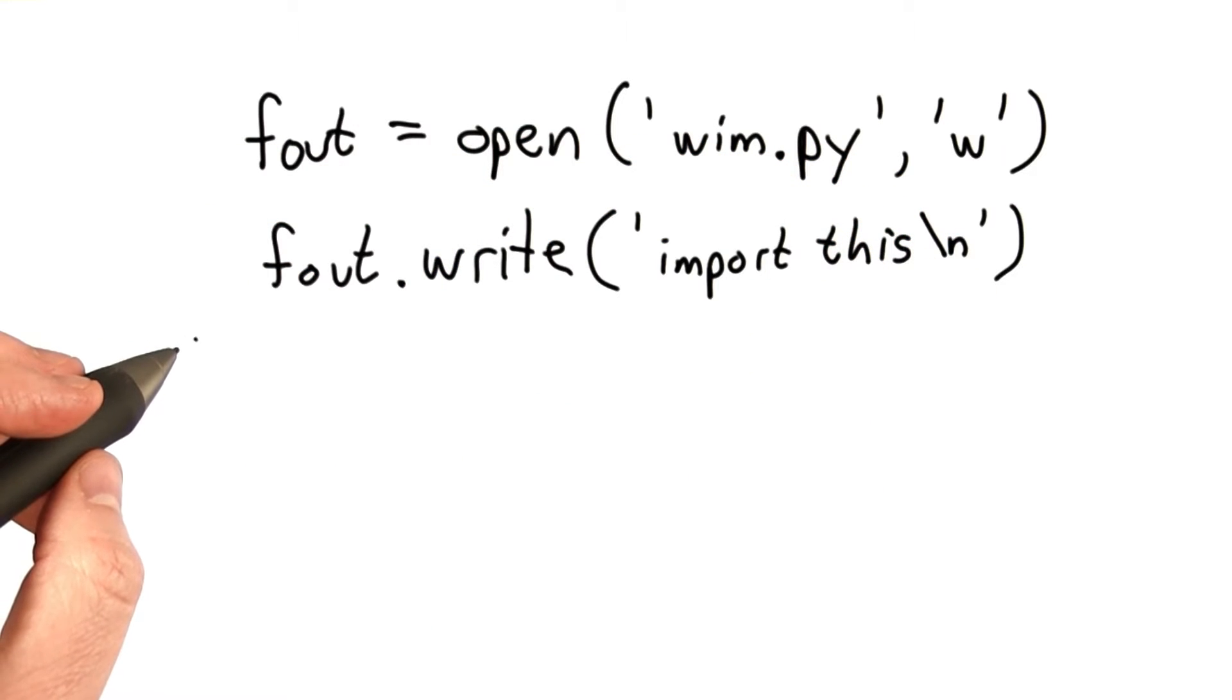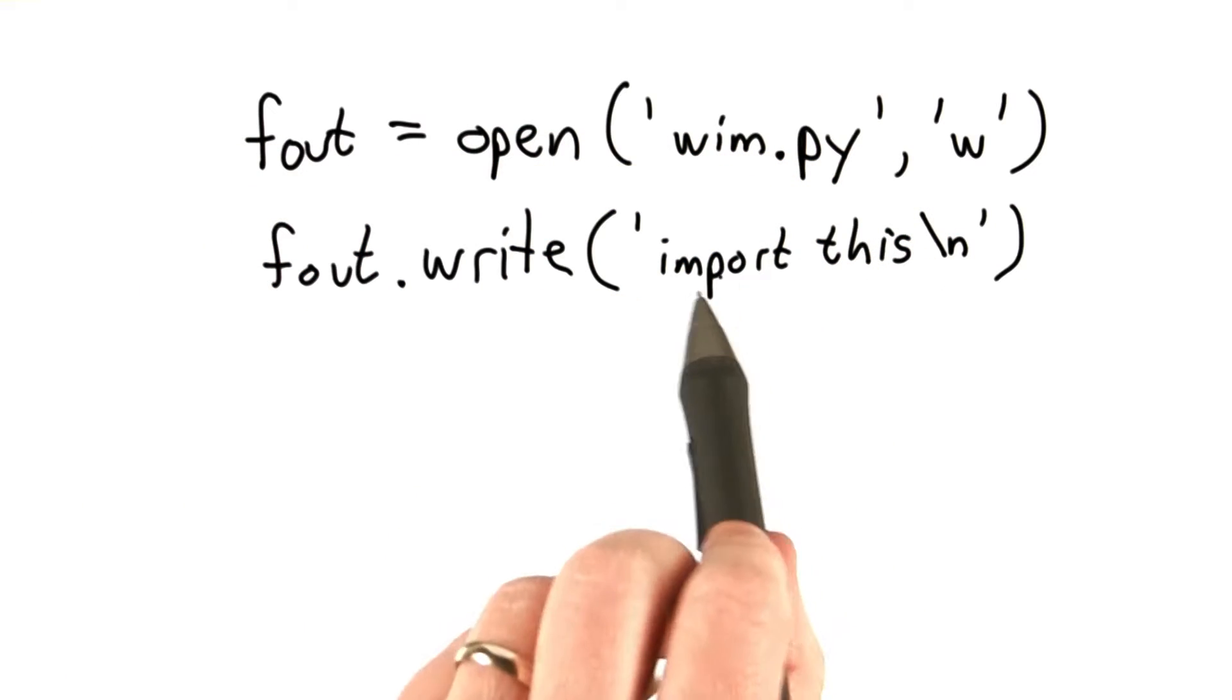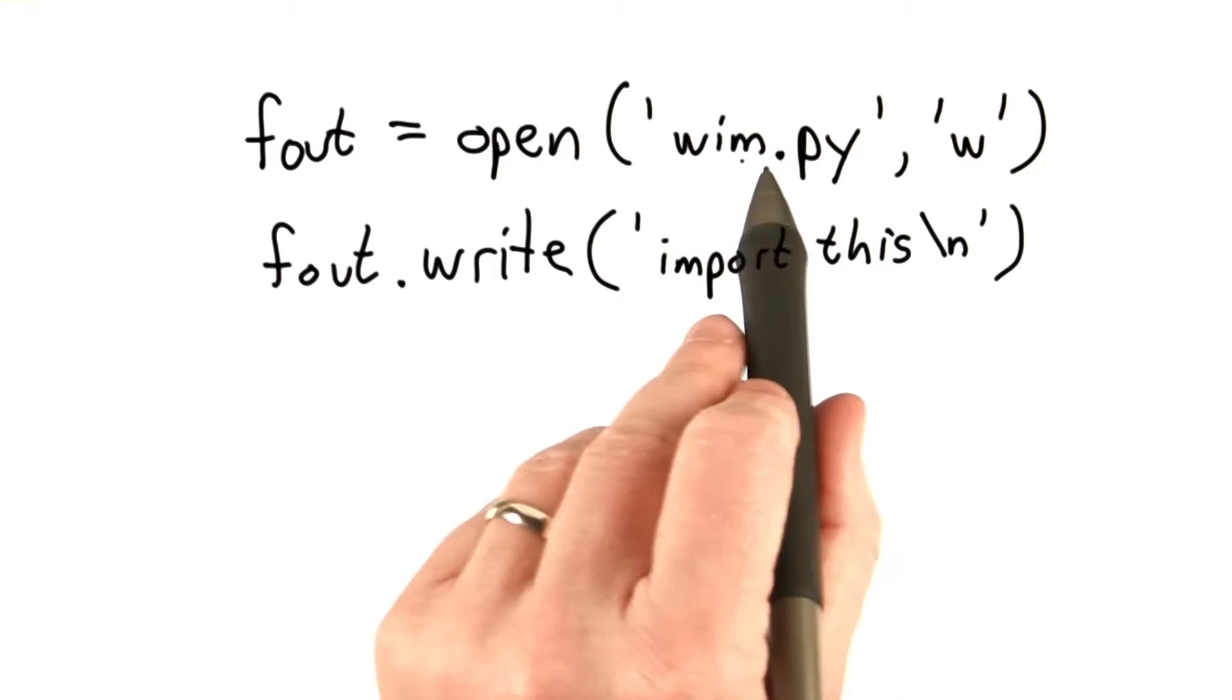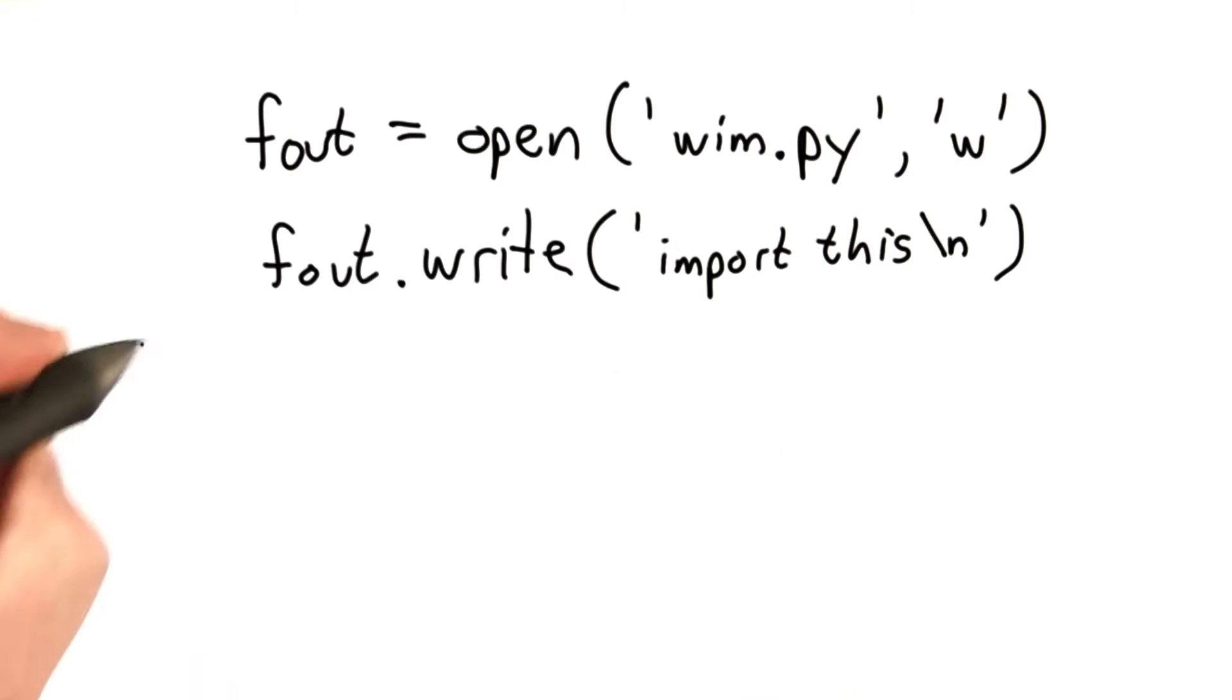So file has a write method which writes to a file, and we can pass in a string. That will write the line import this to the file whim.py in the current directory.